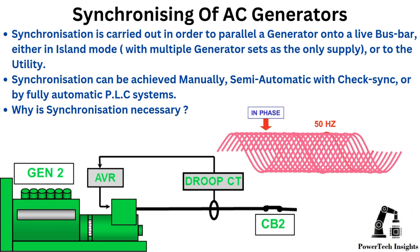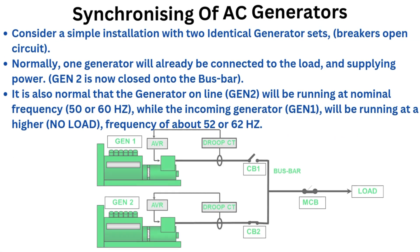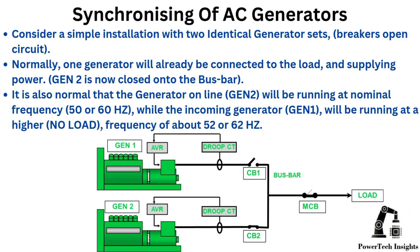Why is synchronization necessary? Consider a simple installation with two identical generator sets with breakers open circuit. Normally, one generator will already be connected to the load and supplying power. Gen 2 is now closed on the bus bar. It is also normal that the generator online, Gen 2, will be running at nominal frequency 50 or 60Hz, while the incoming generator Gen 1 will be running at a higher no-load frequency of about 52 or 62Hz.